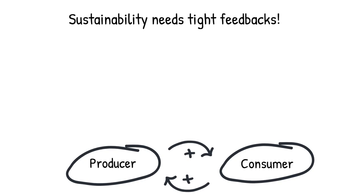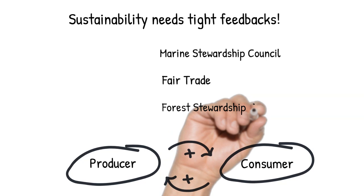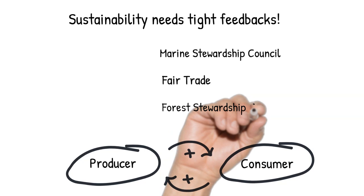That's what local food movements are trying to achieve, shortening the distance between producers and consumers to improve feedbacks. That's also what certifications like the Marine Stewardship Council and Fair Trade are trying to achieve, to increase our ability to access and respond to information about the social and environmental impacts of our food.